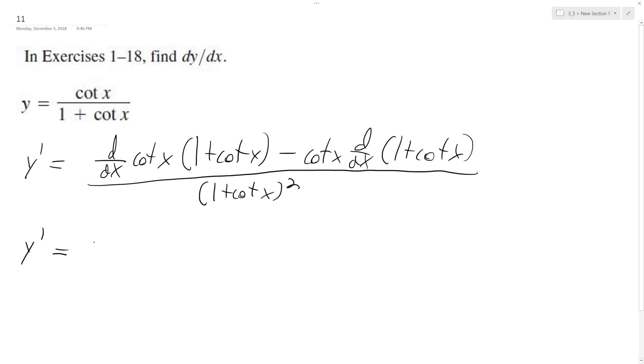we get derivative of the cotangent is negative cosecant squared x and then times 1 plus cotangent x minus cotangent x and then the derivative of 1 and cotangent. So derivative of cotangent again is, well derivative of 1 is 0 but the derivative of cotangent is negative cosecant squared x.